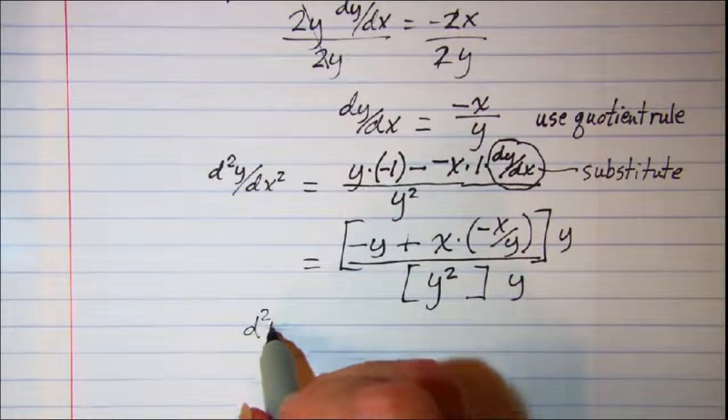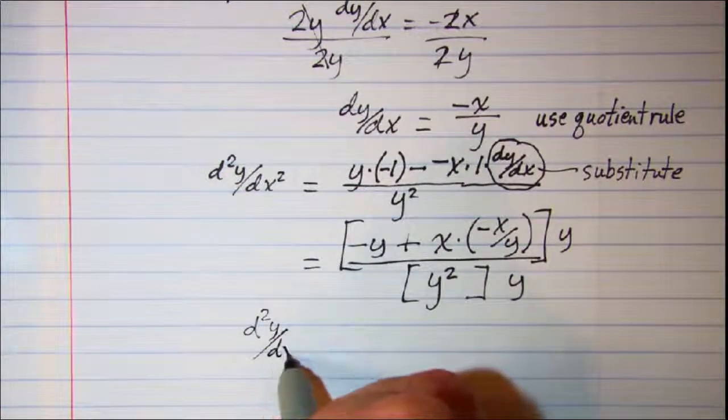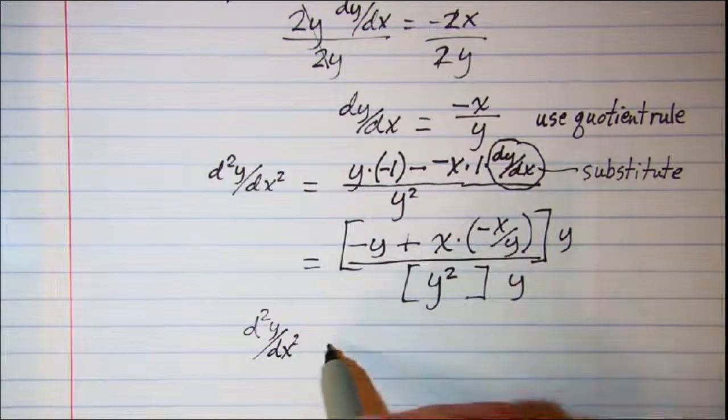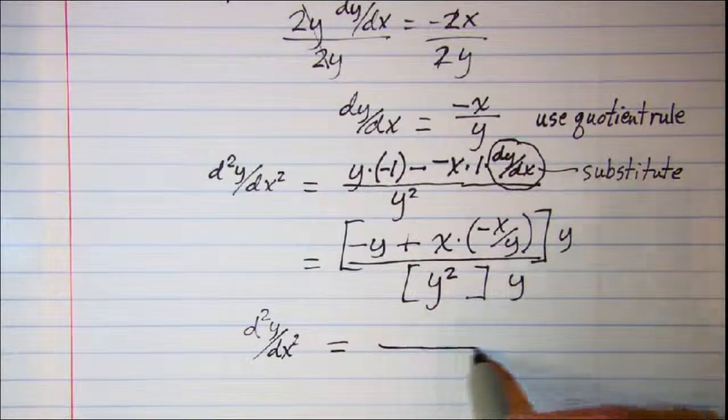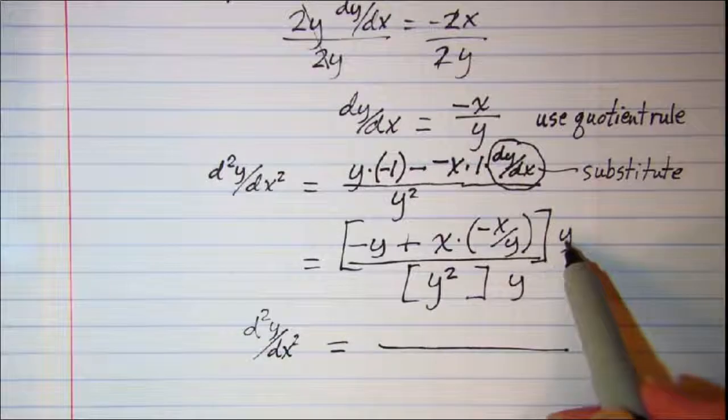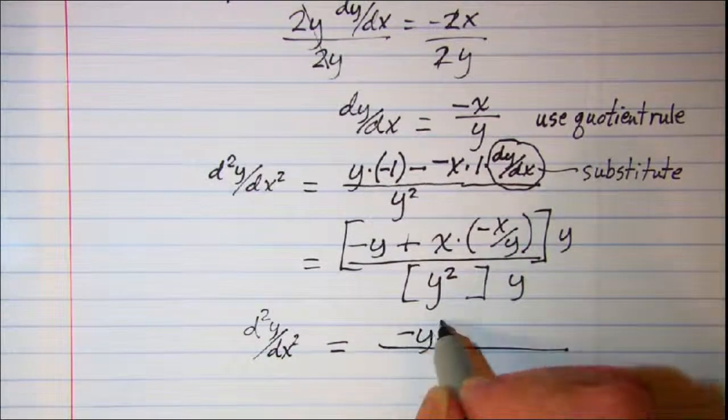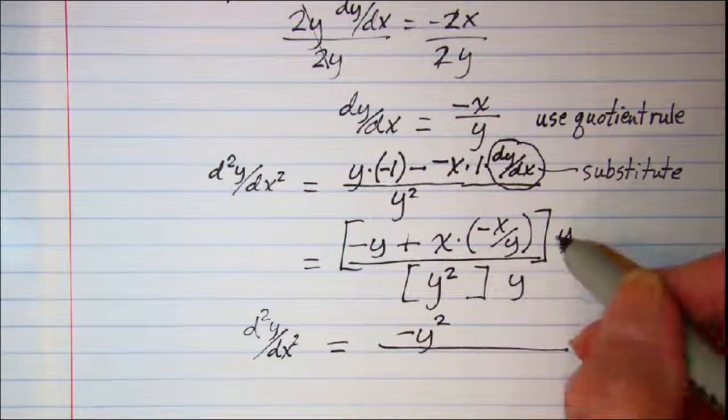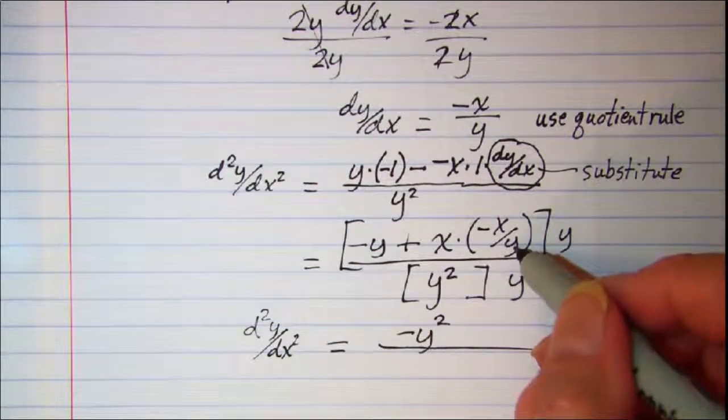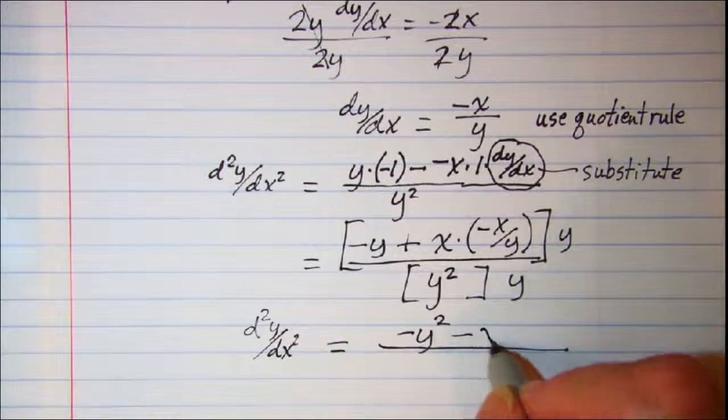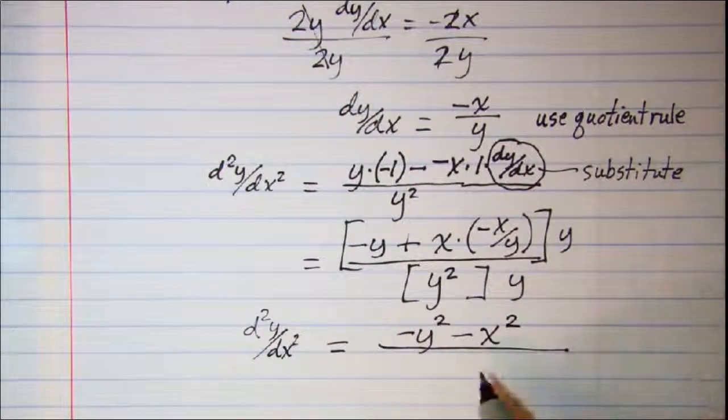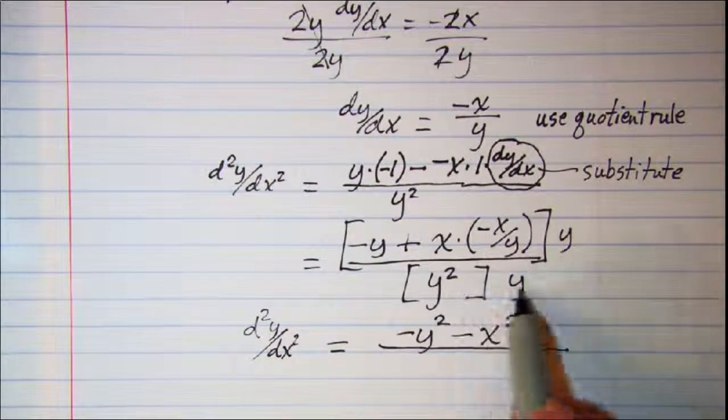So my second derivative with respect to x is when I distribute here I get a negative y squared, x squared and this y cancels with this one and I have negative x squared. And in the bottom I have a y cubed.